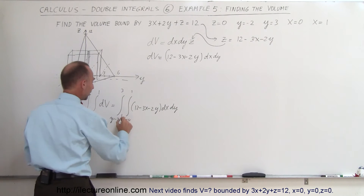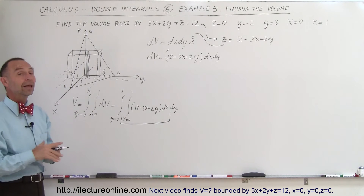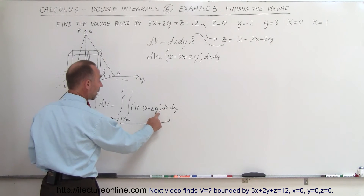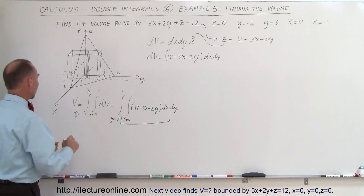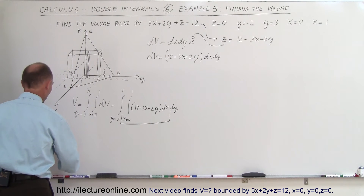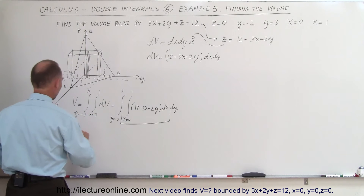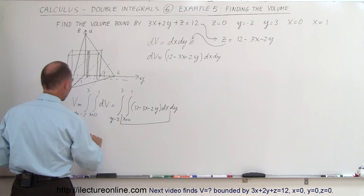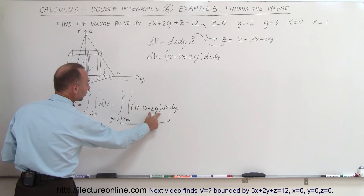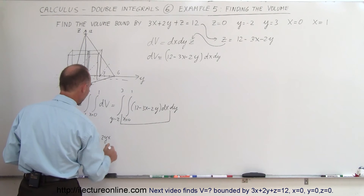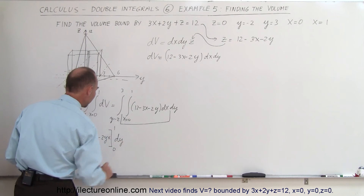We integrate over the x variable first. When integrating over x, y is treated as a constant. So 12 DX becomes 12x, minus 3x integrates to minus 3x squared over 2, and minus 2y times DX gives minus 2yx. This is then evaluated from x equals 0 to x equals 1, with the DY differential remaining.